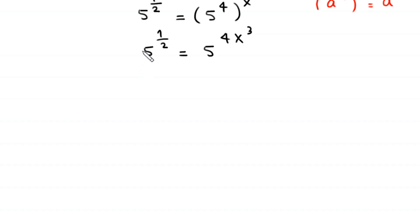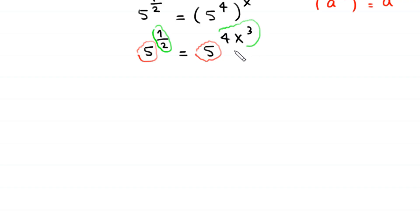Now we have the same base on both sides — base 5 on the left and base 5 on the right. So we can equate the exponents: 1 over 2 is equal to 4 times x cubed.